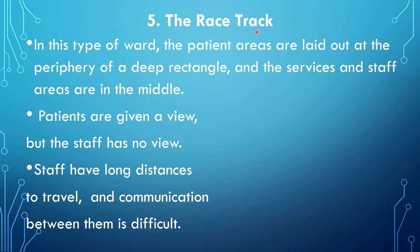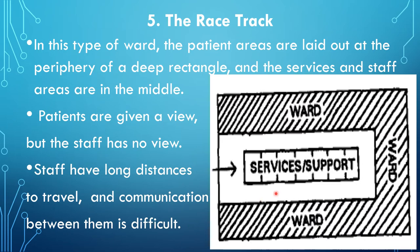The fifth type is the racetrack ward. Patient areas are laid out at the periphery of a deep rectangle, and the services and staff areas are in the middle. Patients are given a view but the staff has no view. The staff has long distances to travel and communication between them is difficult.